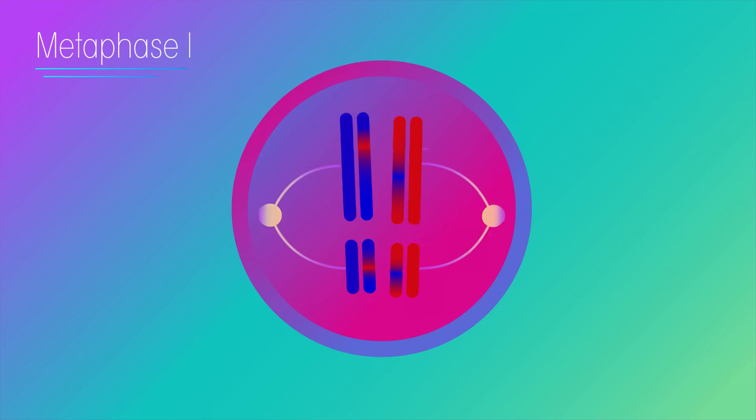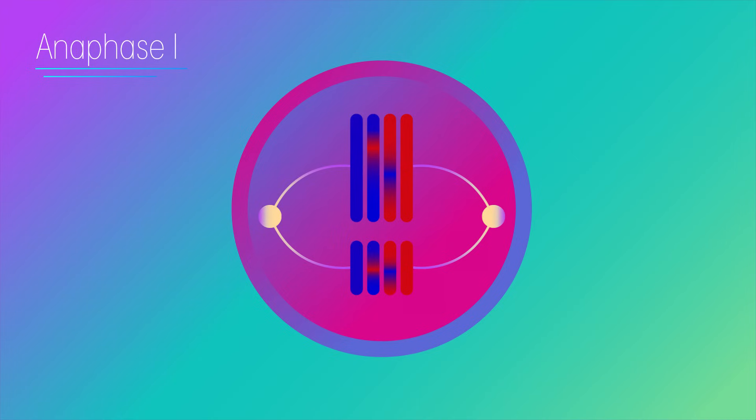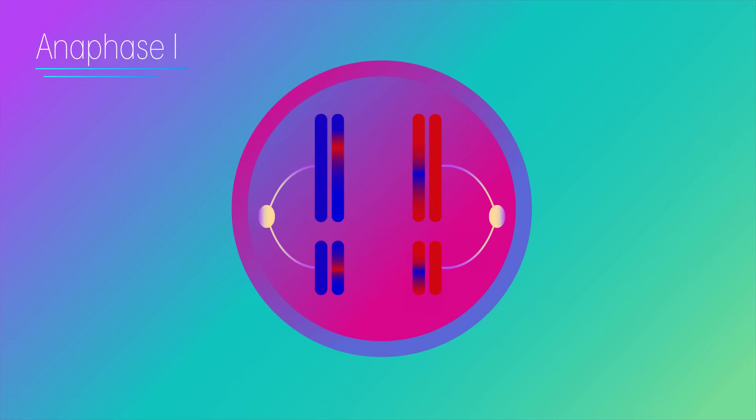Next comes metaphase one, as the chromosomes align themselves up in the middle of the cell. And in anaphase one, the spindle fibers pull the chromosomes apart to opposite ends.